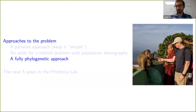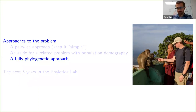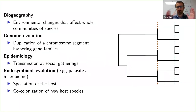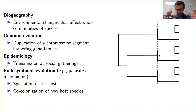Now we get to the fully phylogenetic approach to this problem. This is work done in collaboration with postdoc Perry Wood, who was funded off the NSF grant to do this work. So let's refresh our memory on the motivation: there are all these really interesting biological processes that predict shared divergence times, and we want to develop a general statistical framework for being able to test for those predictions.